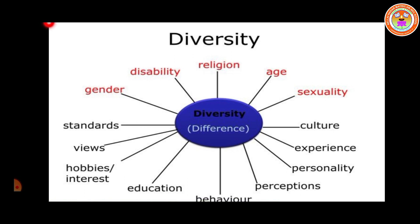Diversity means differences. We have gender diversity and differences in disability. We have differences in religion — people follow different religions like Hinduism, Islam, and Christianity. We also have age differences, differences in sexuality, culture, experience, personality, perceptions, behavior, education, hobbies, interests, views, and standards. All these differences are called diversity.